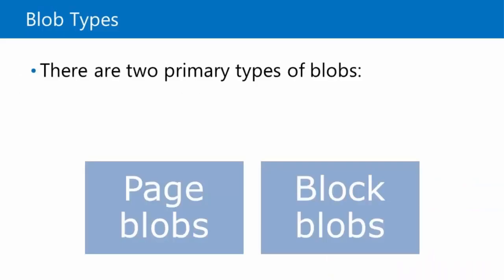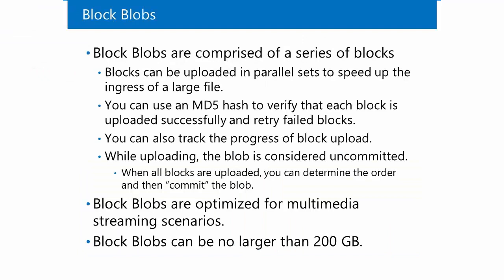There are two different types of blobs. The first type of blob is a block blob, and the maximum size of a block blob is 200 gigabytes. Just think of your typical files on a file system: images, video, music files, documents of any sort, executable files — whatever you want to store up there, you can store up there. That's what you're typically going to be using as a block blob.